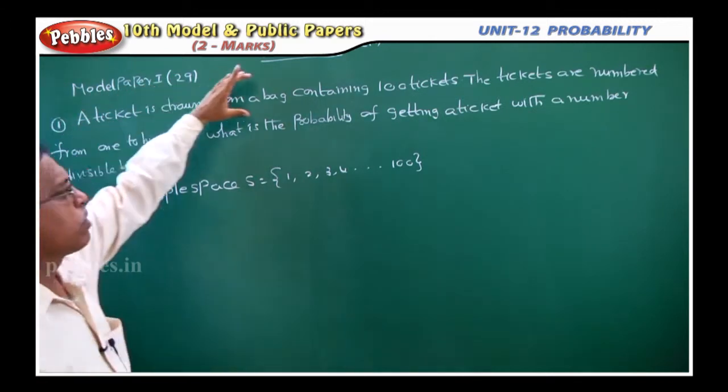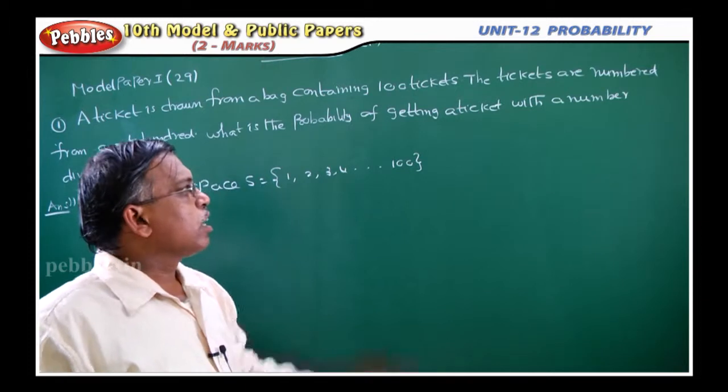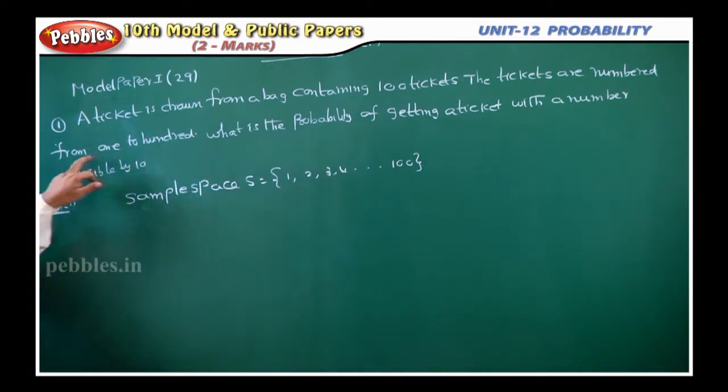A ticket is drawn from a bag containing 100 tickets. The tickets are numbered from 1 to 100. What is the probability of getting a ticket with a number divisible by 10?